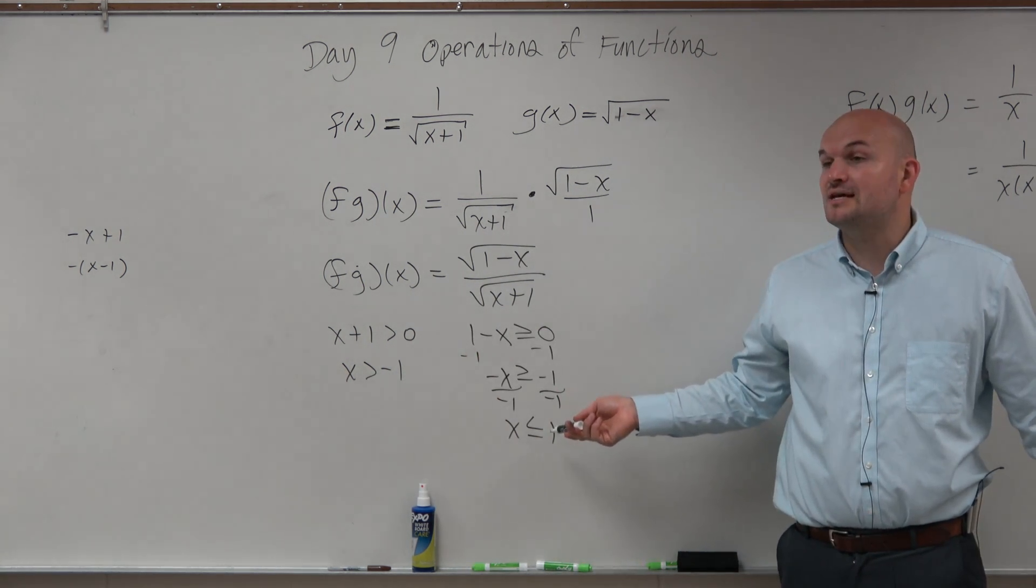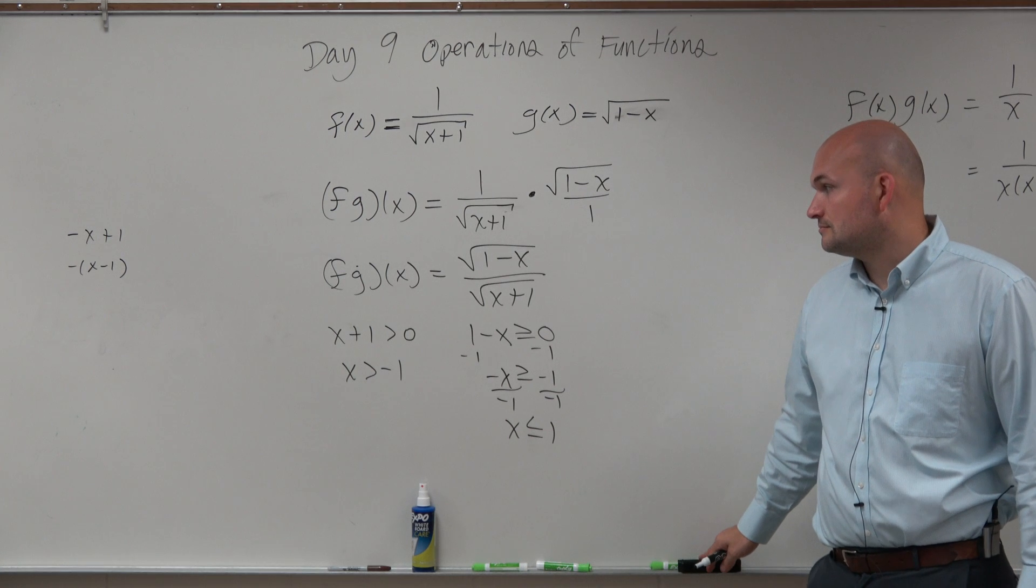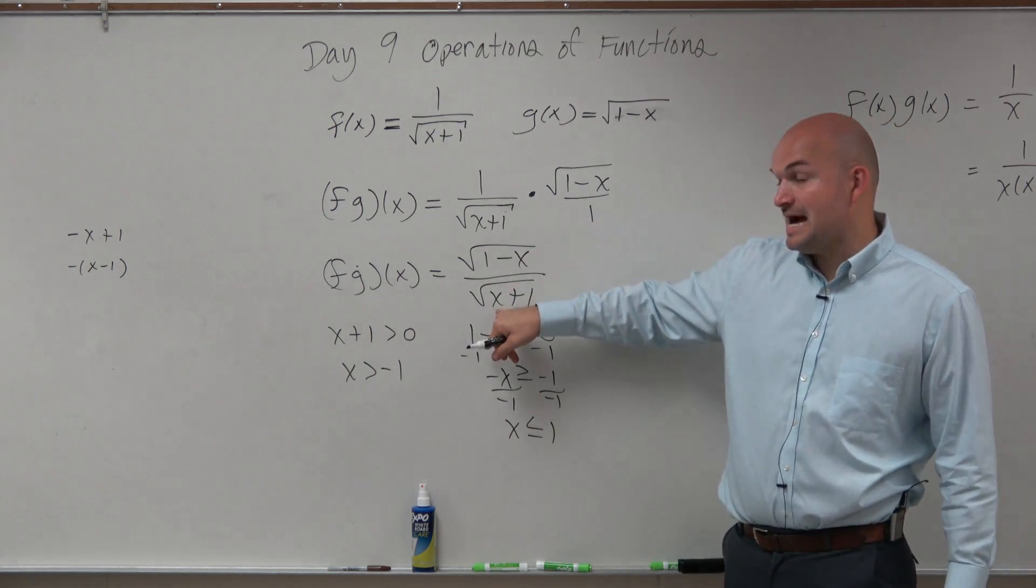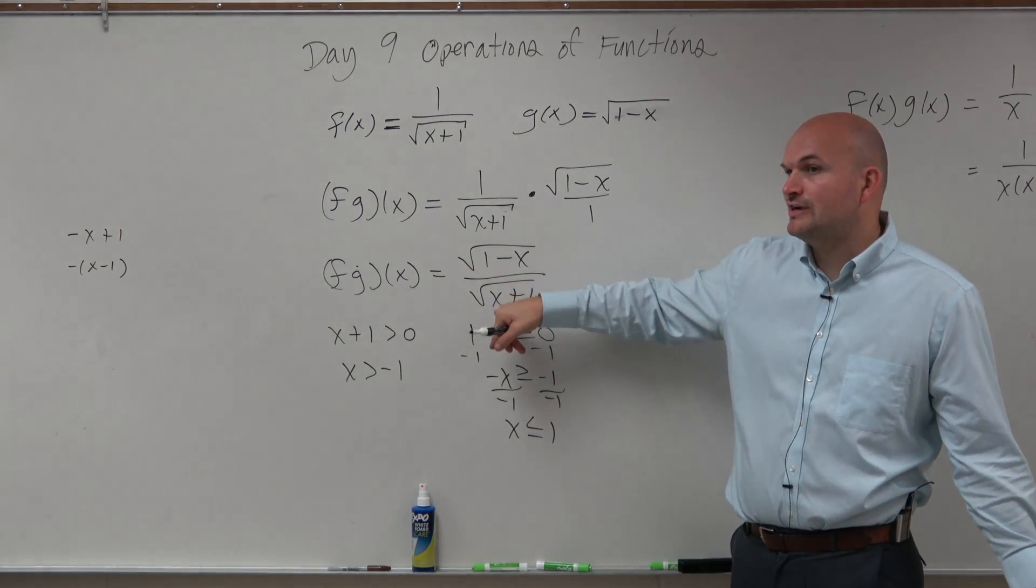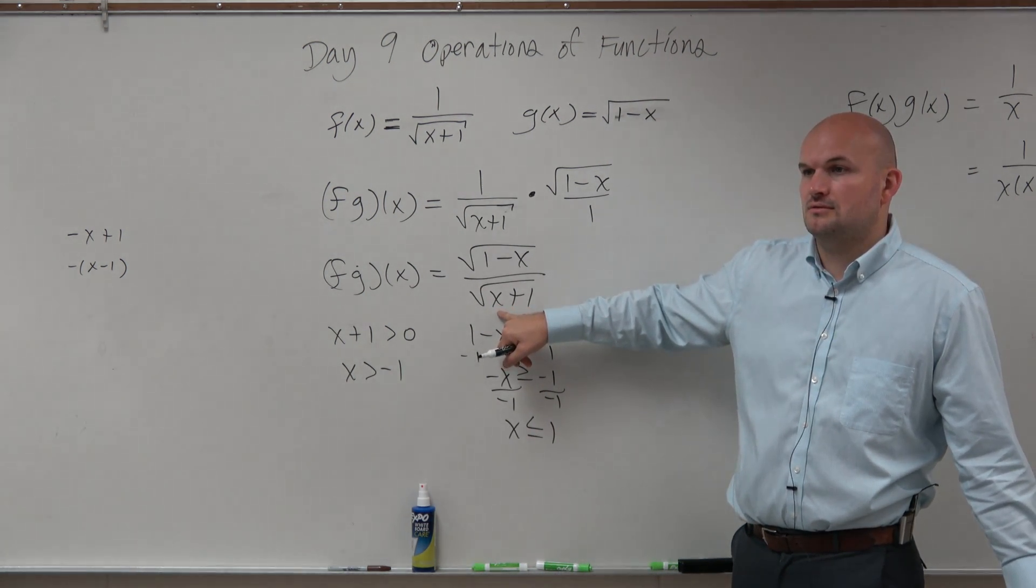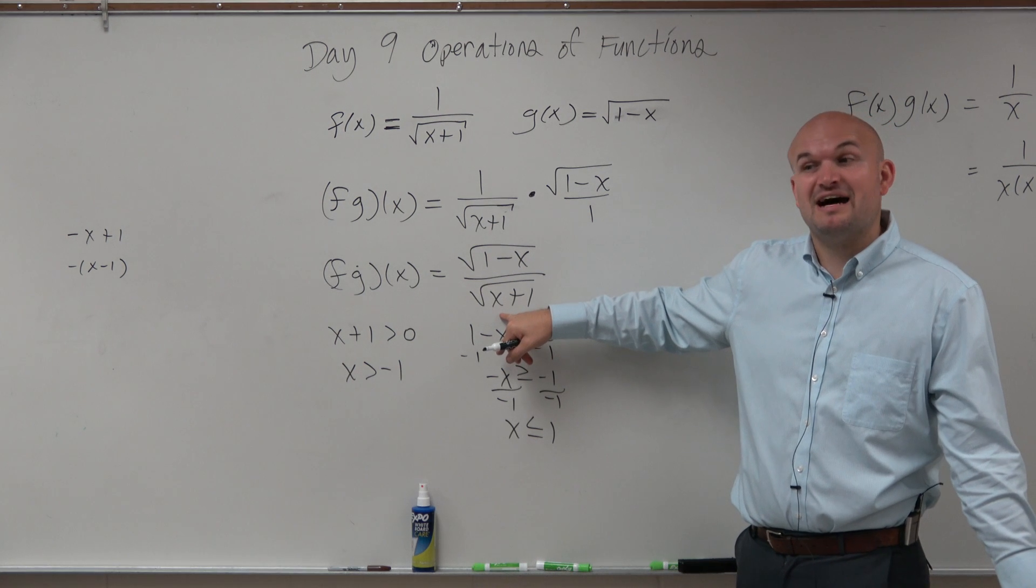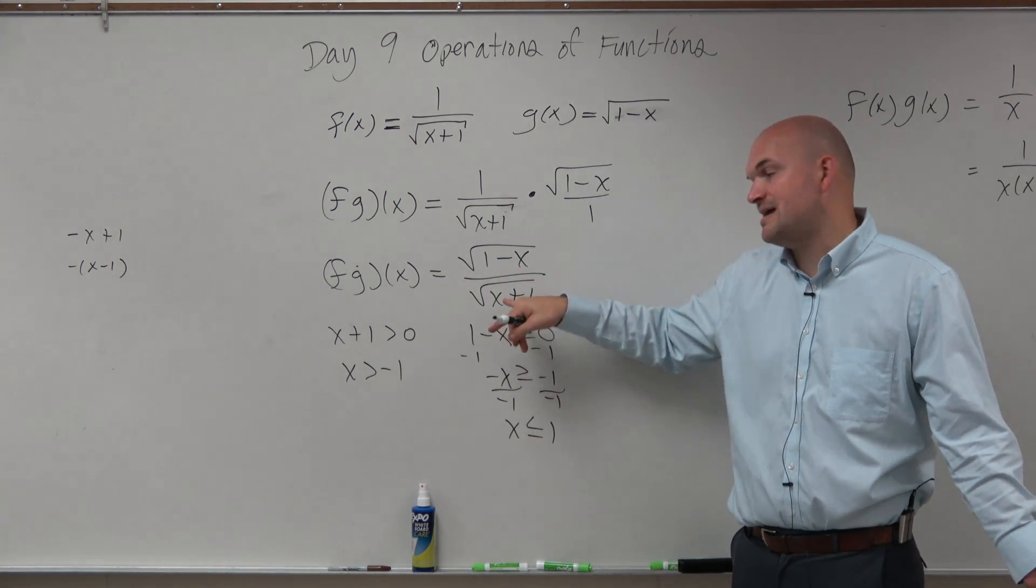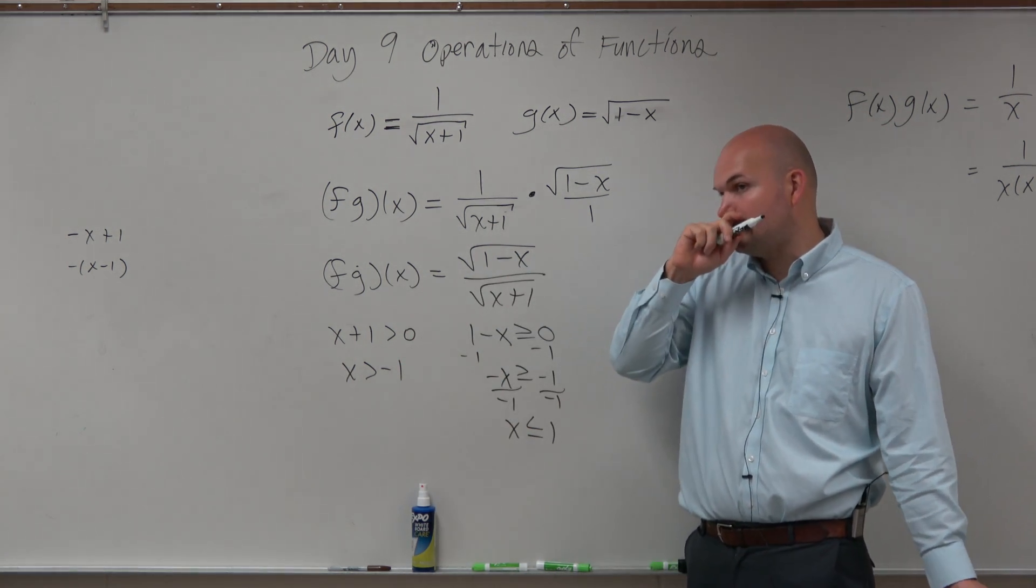My values of x have to be— yes? Why does that one have greater than negative 1? Because it's in the denominator. It can't be greater than or equal to, because what if it was equal to negative 1? What would your denominator be? Zero. And you can't divide by 0. That's why it can't be in the denominator.